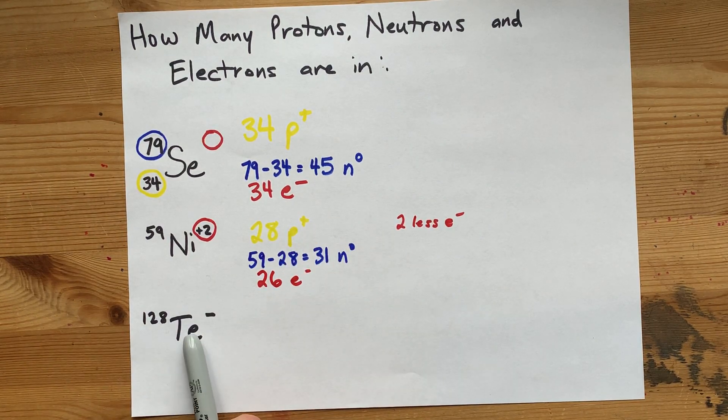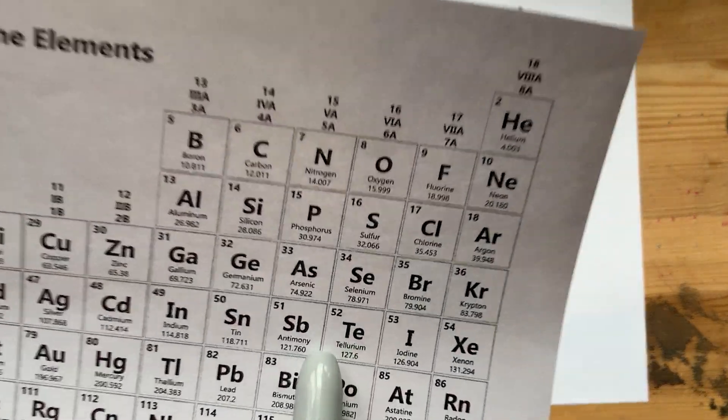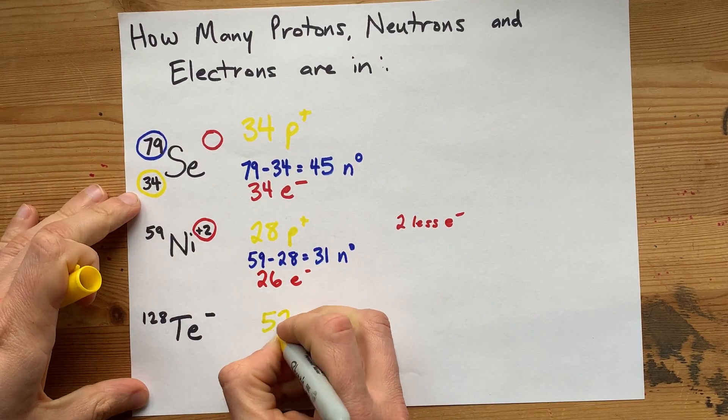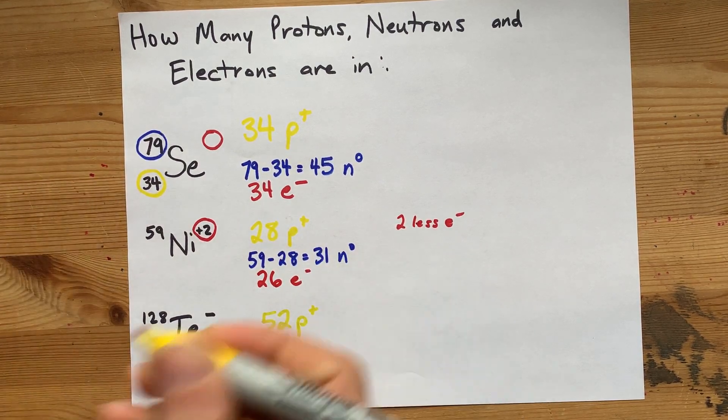One more. Tellurium. Where's tellurium? Is it down here? Yeah. 52. 52 is its atomic number. So, that's 52 protons.